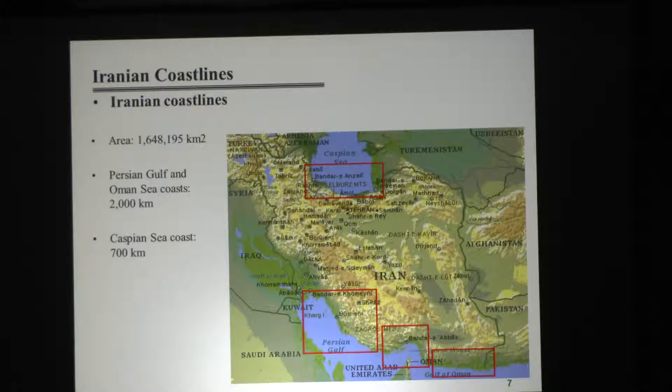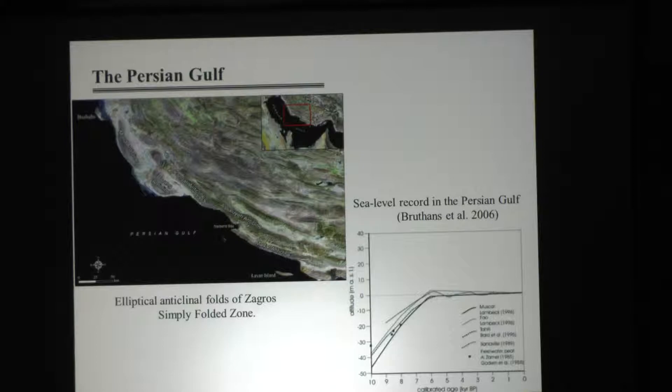This is Iran. We have the Caspian Sea in the north, the Persian Gulf, the Strait of Hormuz, and the Oman Sea in the south. The area of the country is about 1,600,000 square kilometers, and we have roughly 2,000 kilometers of coastline in the south and 700 kilometers in the north.